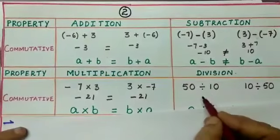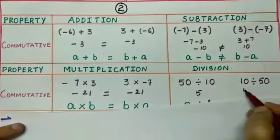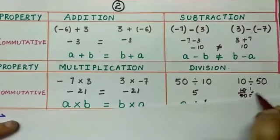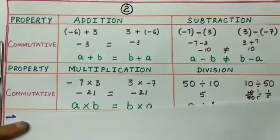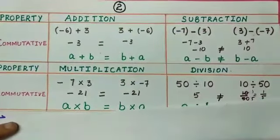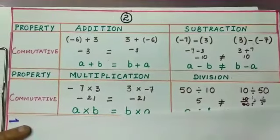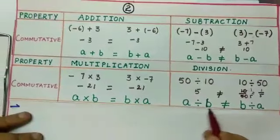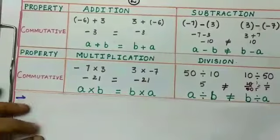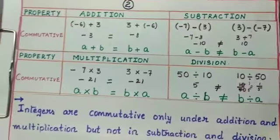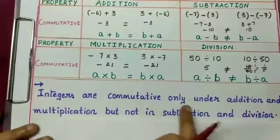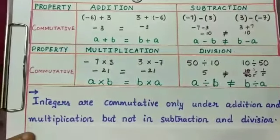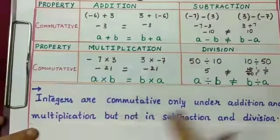Let us check commutativity under division: 50 divided by 10 is 5, but 10 divided by 50 is 1 by 5. Since 5 is not equal to 1 by 5, integers are not commutative under division. Generally, for any two integers a and b, a divided by b is not equal to b divided by a. We conclude integers are commutative only under addition and multiplication, but not under subtraction and division.